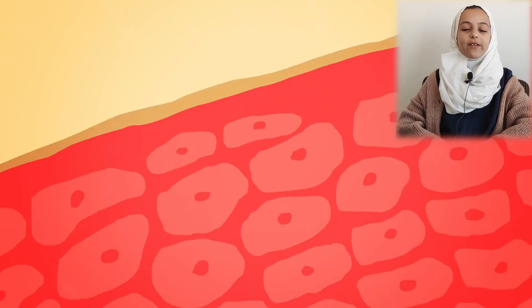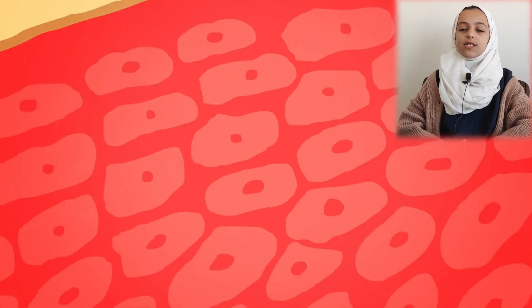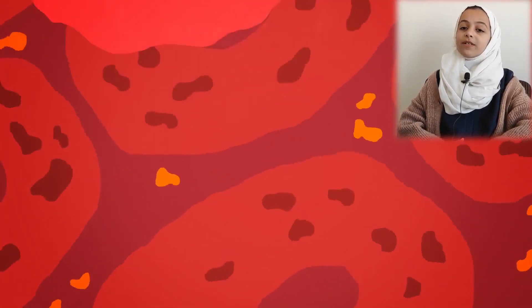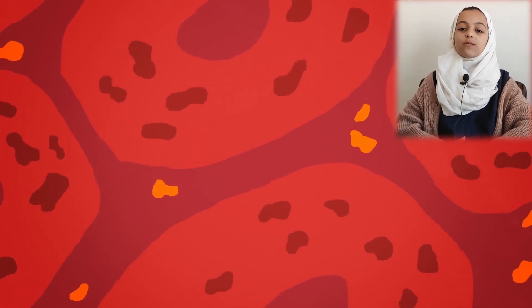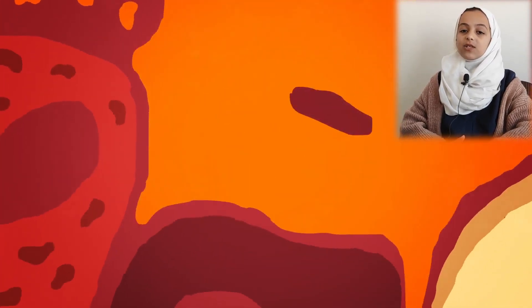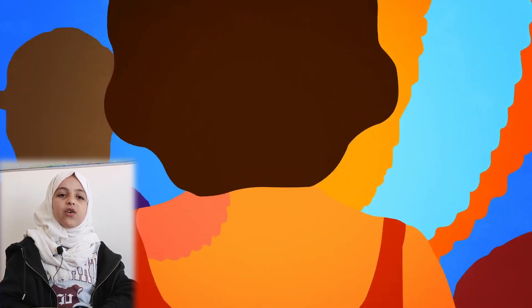Whatever the color, our skin is an epic tale of human adaptability. Its variation is a function of biology — specifically melanin, the pigment that gives hair and skin its color. Melanin comes from skin cells called melanocytes. When skin is exposed to UV light for a long period of time, the UV damages the DNA within our cells and skin starts to burn.